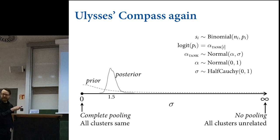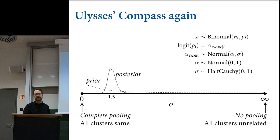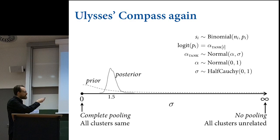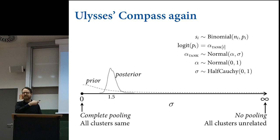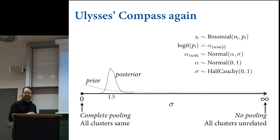This is the wonderful thing: this is the adaptive regularization of varying effects models. This is the simplest sort of model we can concoct—it just has one kind of intercept, clustering on tanks. But this same principle holds no matter how many different types of clusters. You can do this with slopes too, which is what we're going to do next week. Why do we do this? Because we're terrified of overfitting.